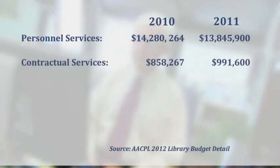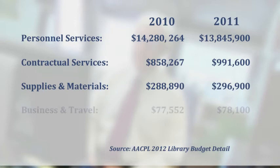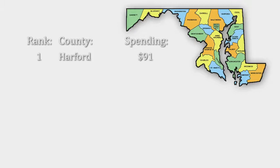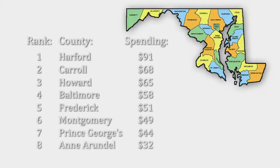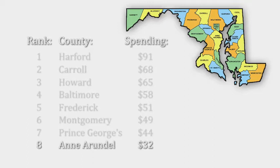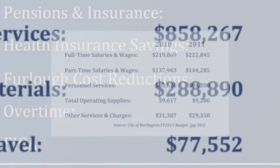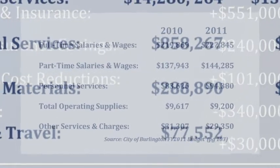A major problem with line item budgets is that they don't convey any meaning behind the numbers. Is an $18 million budget for Anne Arundel County Public Library high or low? One can only know in comparison to something else. A common approach is to show expenses relative to a community's population, as Anne Arundel did in this slide from a town hall presentation. Here, the library is benchmarking per capita spending against peer library systems in the state of Maryland.